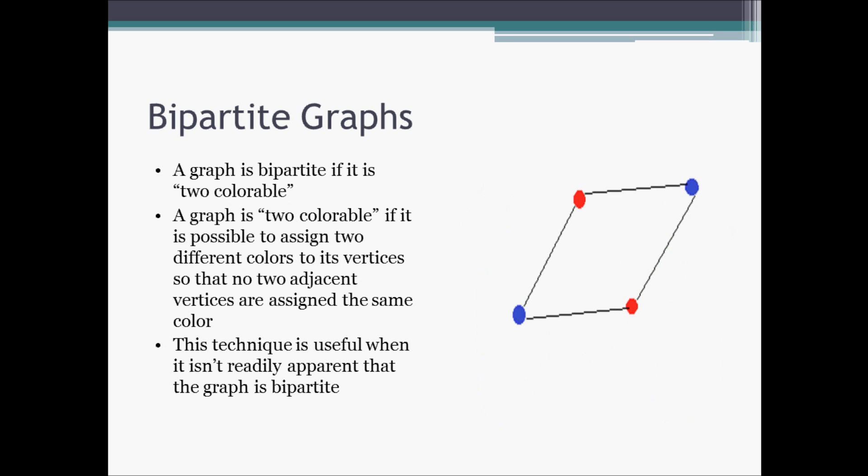The discussion of bipartite graphs on the last slide was a little bit technical, so on this slide we'll introduce another method to determine whether or not a graph is bipartite. We know that if a graph is bipartite, it is also two-colorable. By definition, a graph is two-colorable if it is possible to assign two different colors to its vertices so that no two adjacent vertices are assigned the same color.